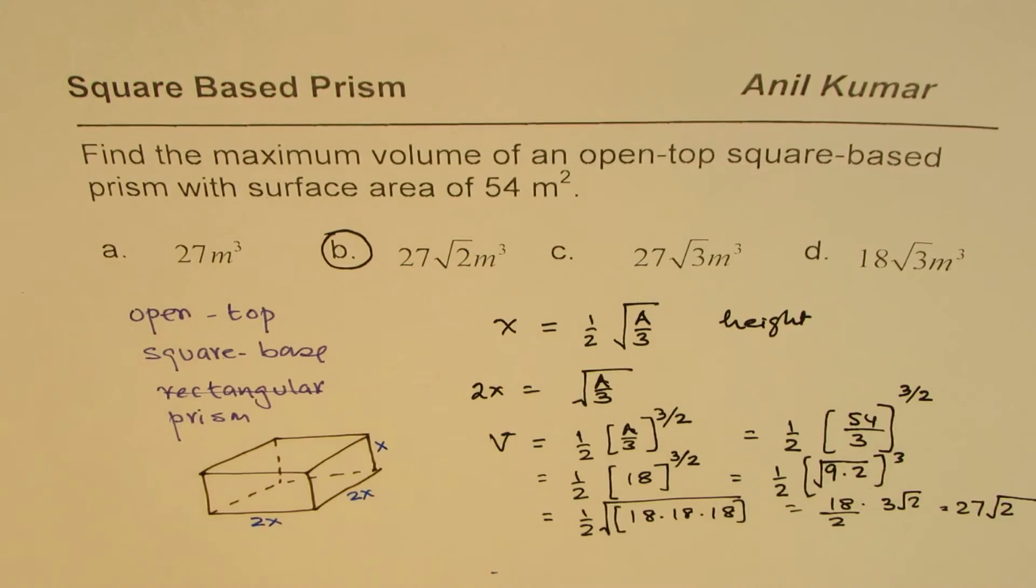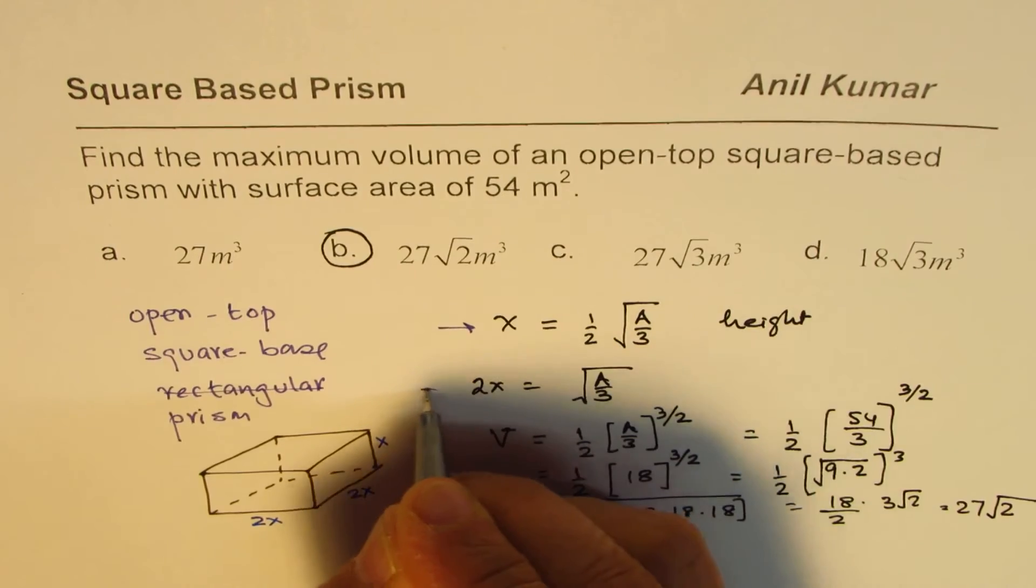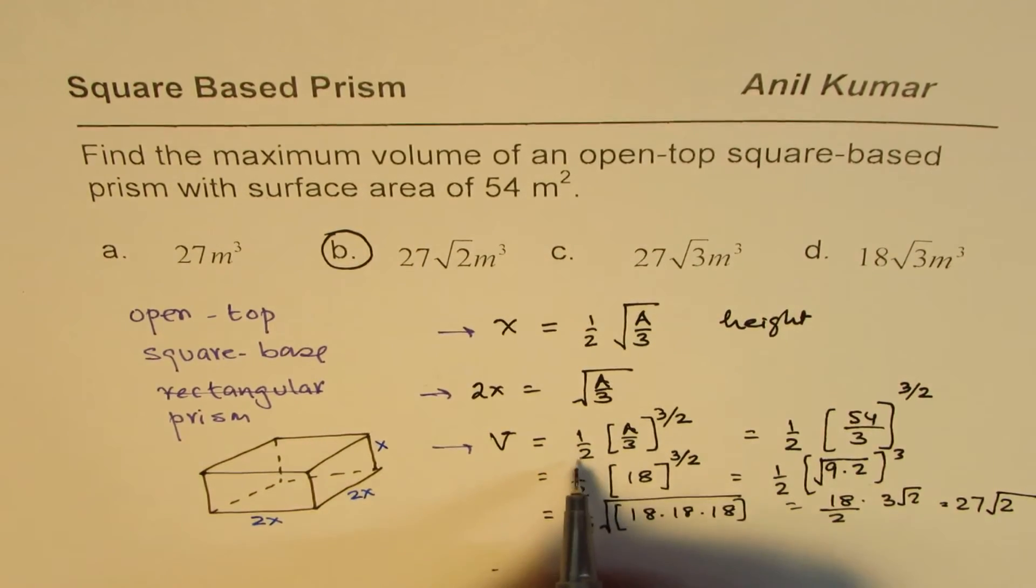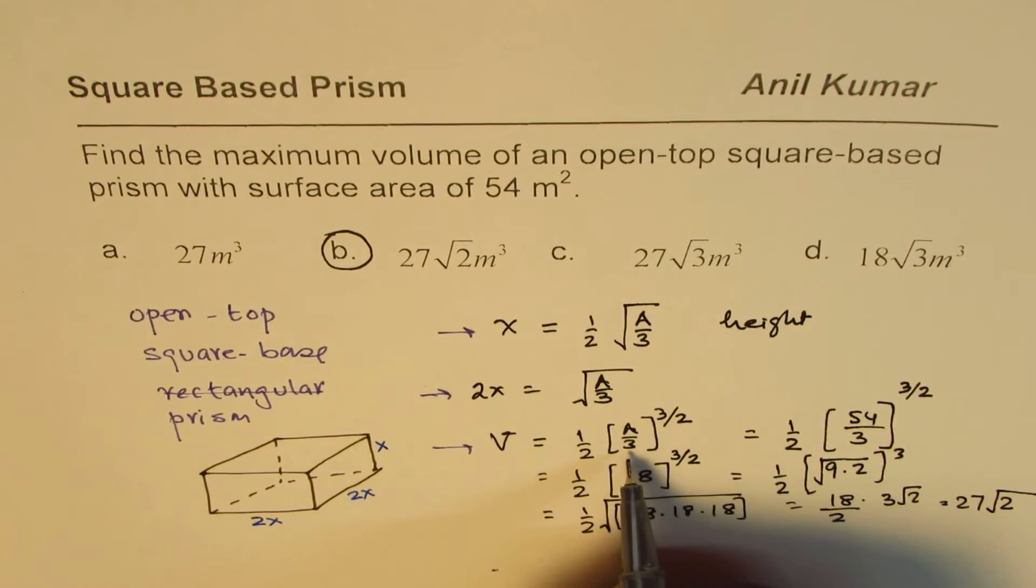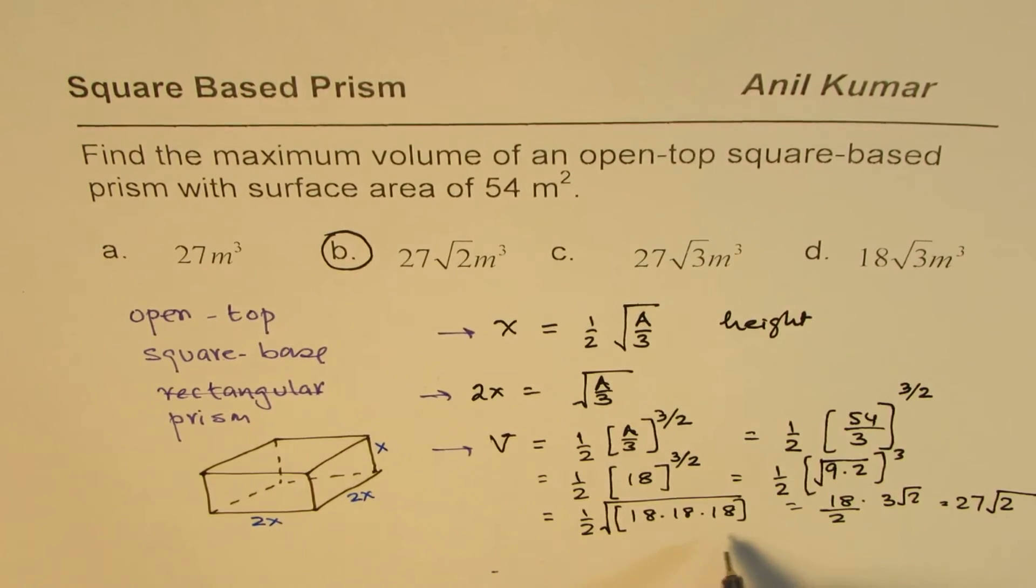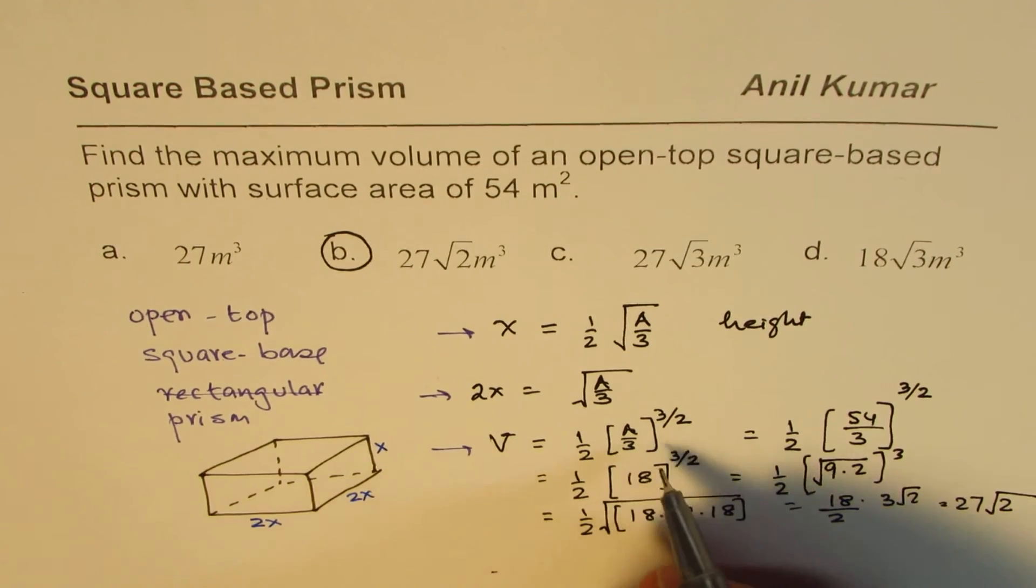So that is how you can actually find the volume of a square-based prism. It's kind of important to know these formulas. So that's the idea of sharing these formulas with you. So these are the dimensions, and the volume formula is half times one third of the area—surface area—to the power of 3 over 2. So that really helps to calculate this kind of a question.